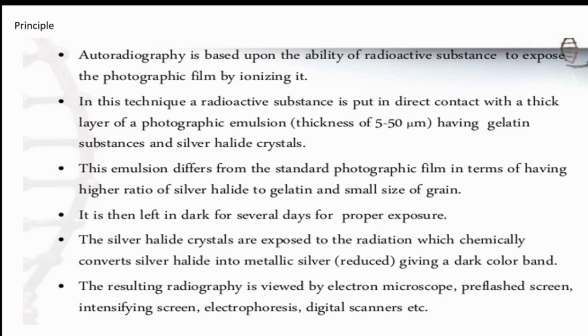After we have the radioactive substance put in direct contact with thick layer of photographic emulsion, and that contact, by keeping that contact, we made it intact for several days for getting proper exposure, for getting that radioactive isotope sufficient exposure to that photographic film. After getting sufficient exposure, what is happening? A reaction is happening in that emulsion. The silver halide crystals that are present in the emulsion are exposed to radiation emitted by radioactive isotope, and that silver halide crystals are converted to metallic silver. That means it undergoes reduction, and because of that reaction, it gives a dark color band.